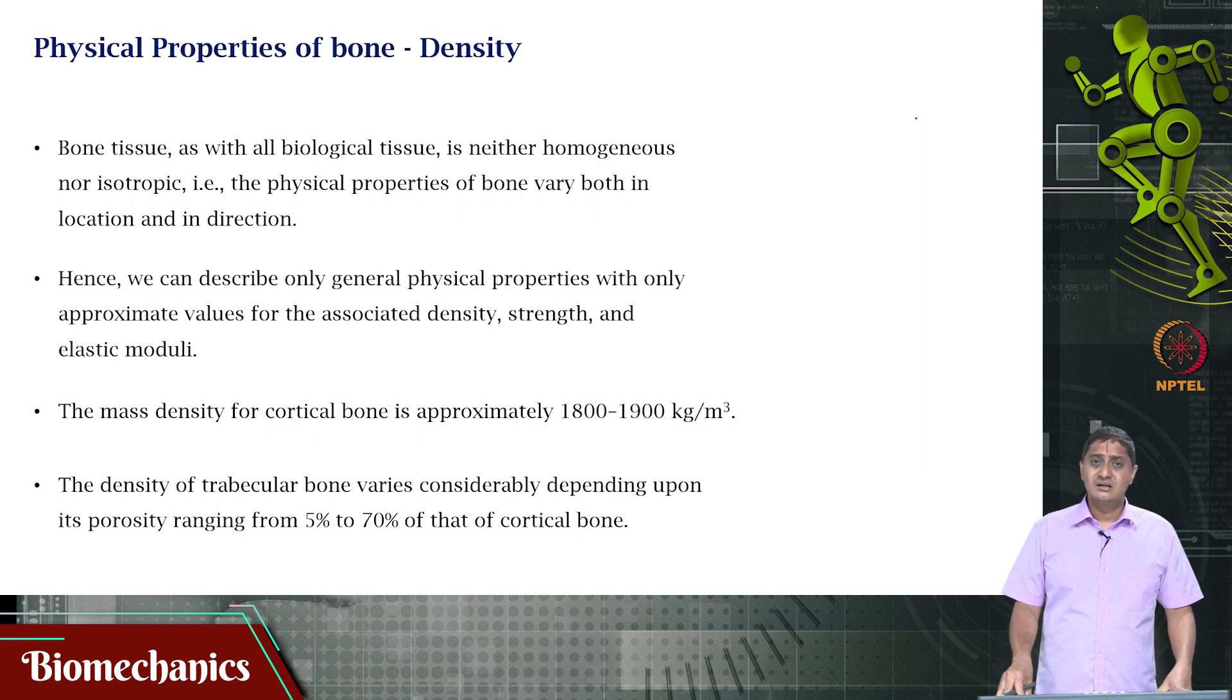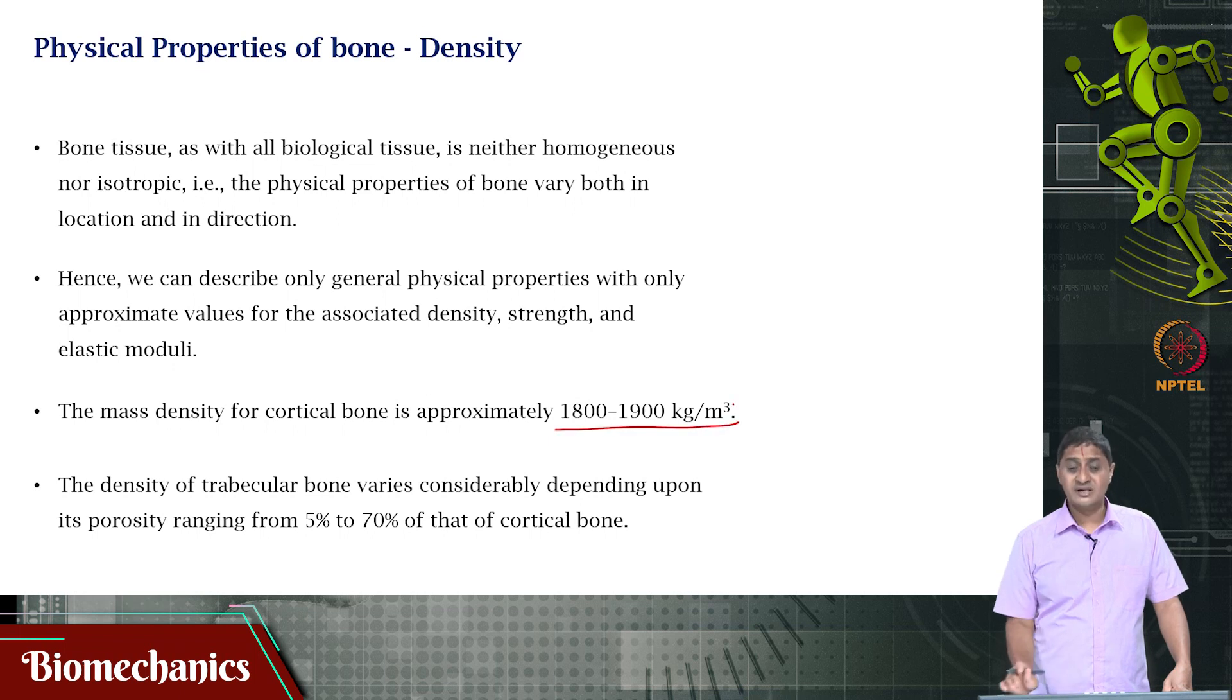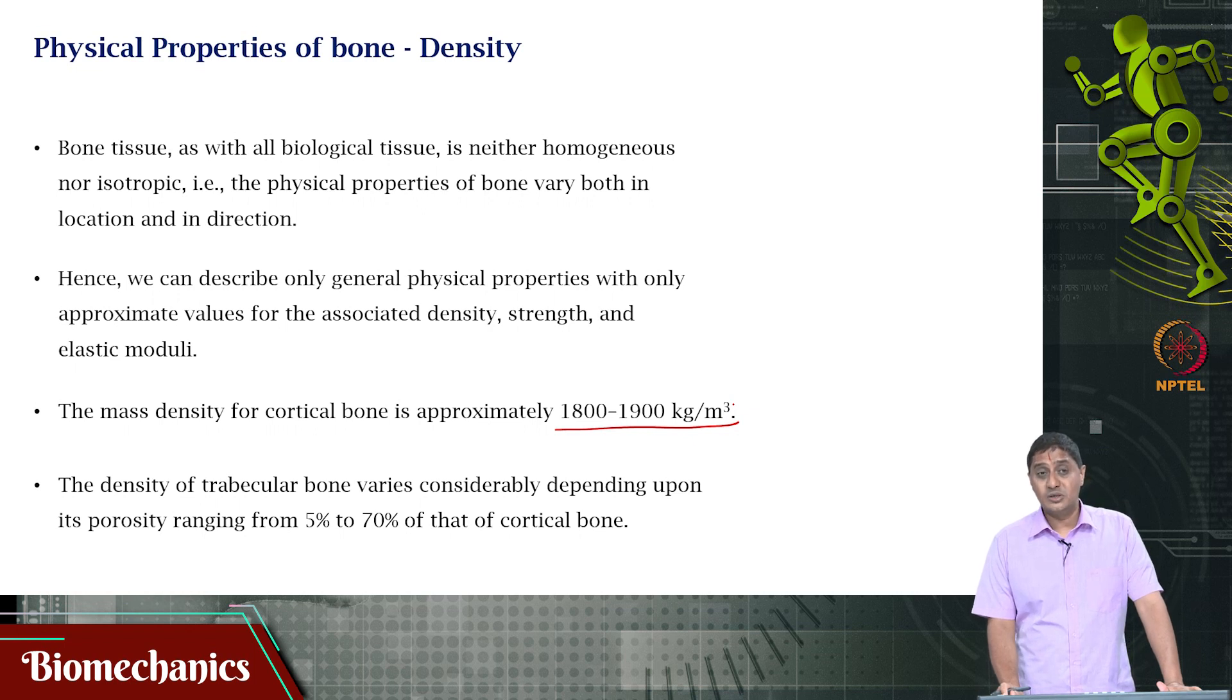These are approximate values for specific bones that were tested or sampled. For cortical bone, the density is approximately 1800 to 1900 kilograms per meter cubed, about two times the density of water, which is quite dense. The density of the cancellous or trabecular bone changes substantially.